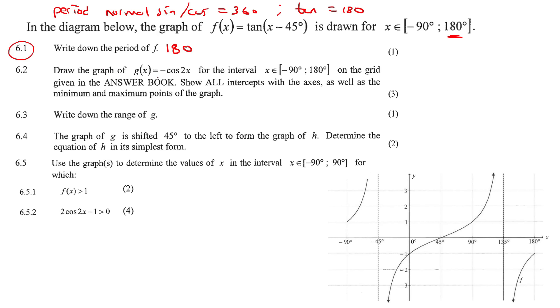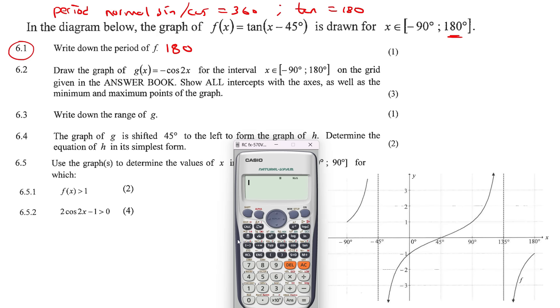Draw the graph of this over the interval negative 90 and 180 on the grid given in the answer book. So we can just use this one over here. Show all the intercepts as well as the minimum and maximum points of the graph. So when you draw a graph, I want you to use your calculator. It is the most easiest way to do it.